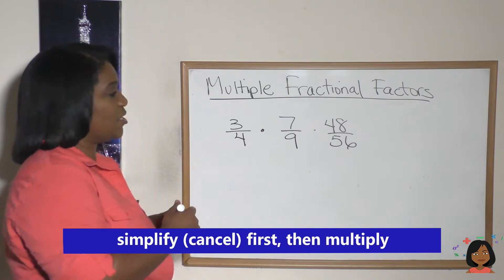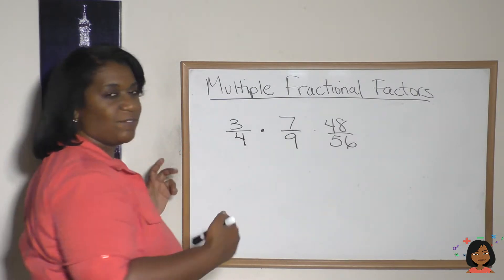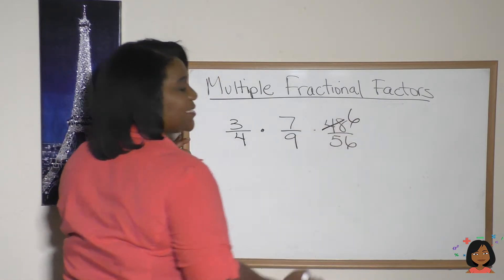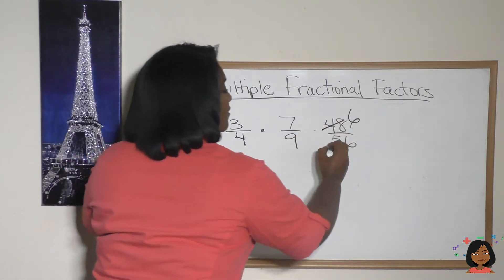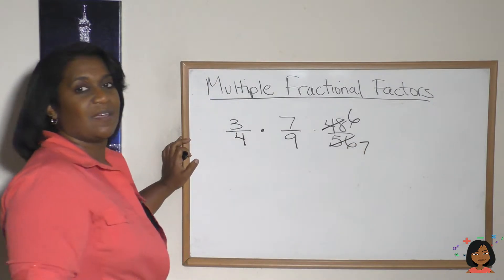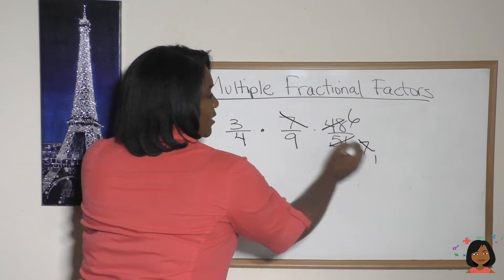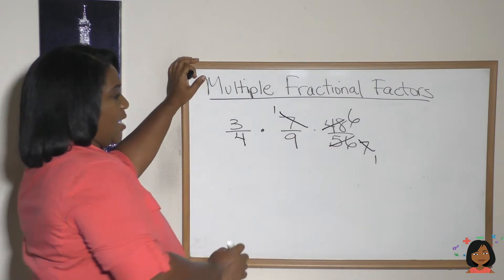All right, let's look for some factors. Well, here's an easy one: 48 and 56. We know eight goes into both of those, right? Eight goes into 48 six times and eight goes into 56 seven times. You see anything else? I see tons. I see seven goes into seven, so they're down to one there.